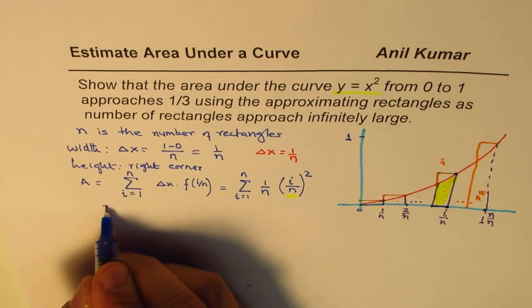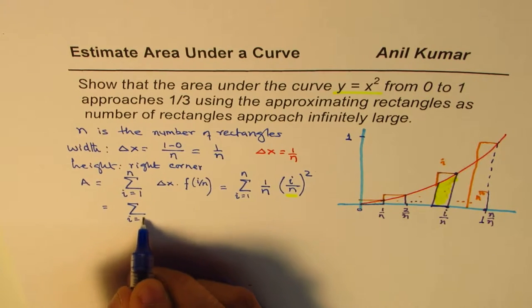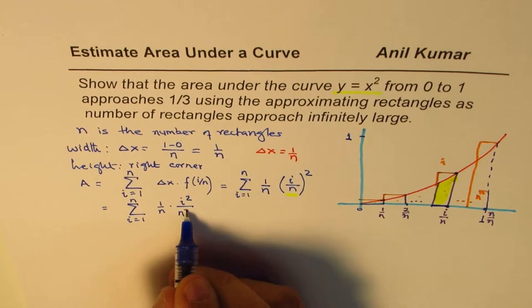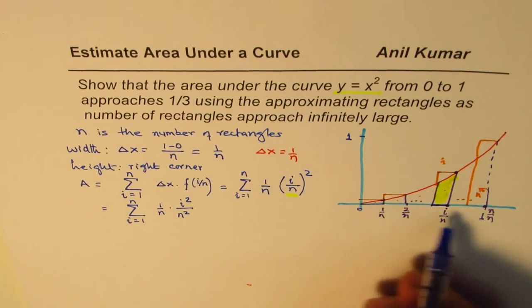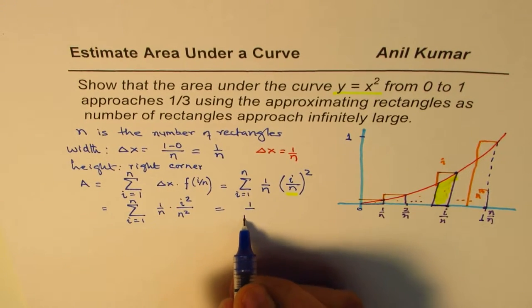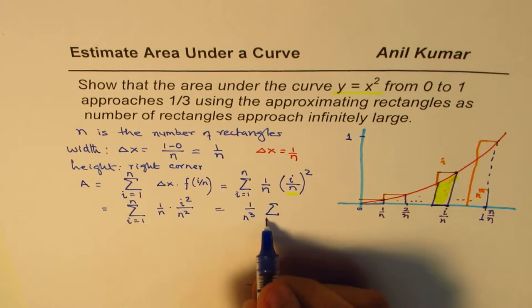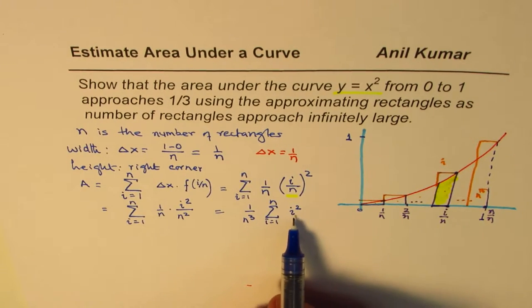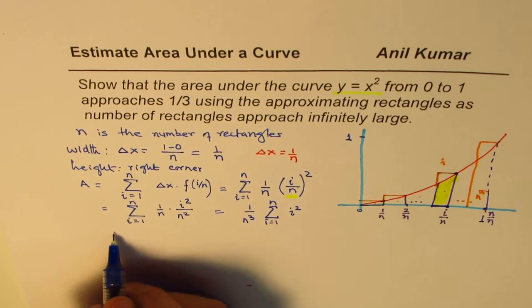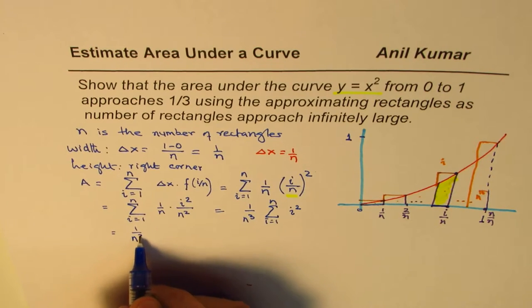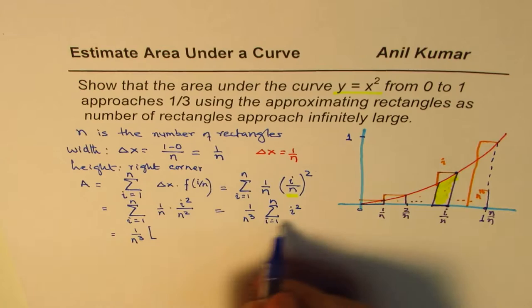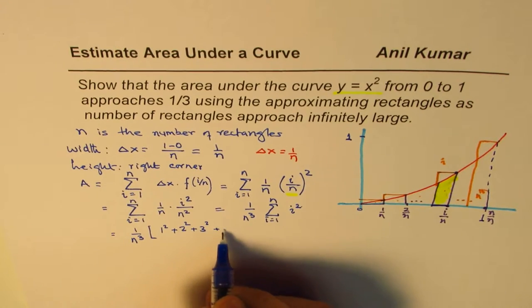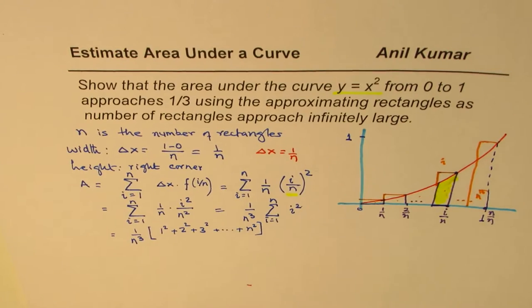Now what we can write this as, we can write this as sigma i equals 1 to n, 1 over n times i square over n square. Now i varies from 1 to n. These are numbers which are constants. We could write this as 1 over n cube sigma i equals 1 to n, i square. Sum of natural numbers square, that is what we are getting. So basically as you see here we have 1 over n cube and this sum is kind of a series. When i is 1 it is 1 square, plus i is 2 it is 2 square, i is 3 it is 3 square, plus so on till the last term which is n square. So that is what we get.